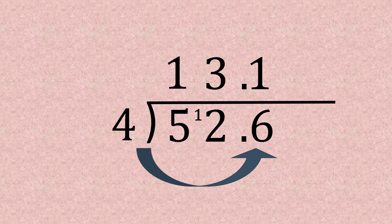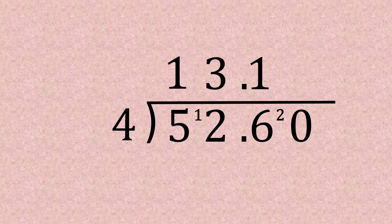And again we need to add our zeros under the bus stop to get rid of the remainders. So fours into 20 goes five times, so there we have it, our answer is 13.15.